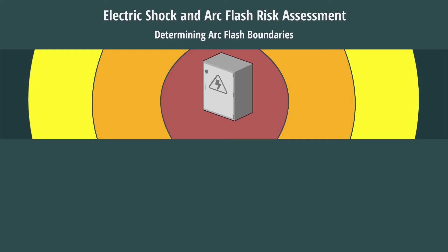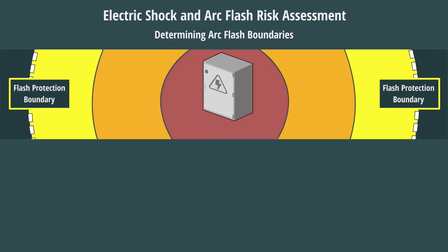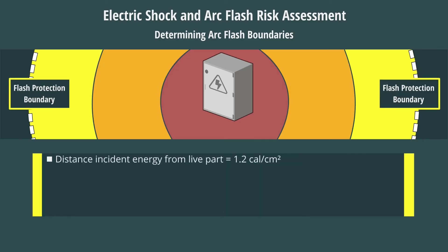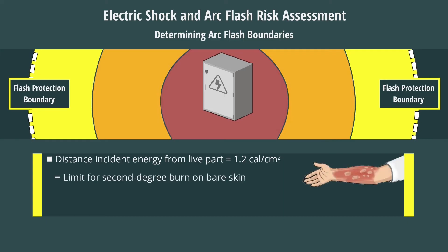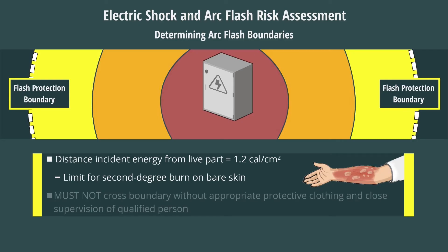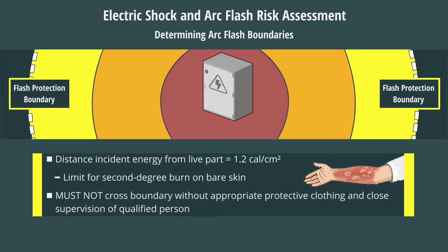When determining what the arc flash boundaries are, the assessment will include the following items. First is the flash protection boundary. This is the distance at which the incident energy from the live part is equal to 1.2 calories per square centimeter, which is the limit for a second-degree burn on bare skin. Persons must not cross this boundary unless they are wearing appropriate protective clothing, and are under the close supervision of a qualified person.